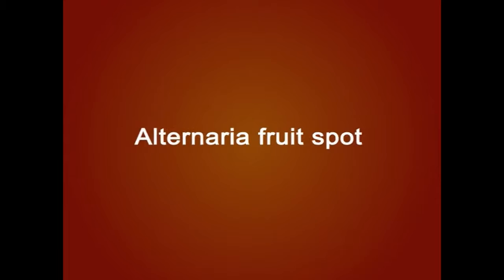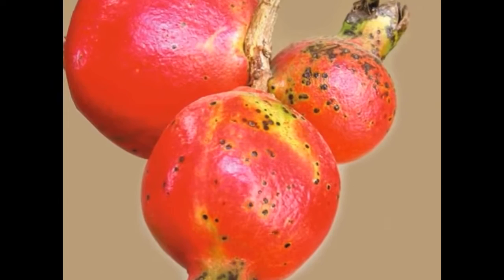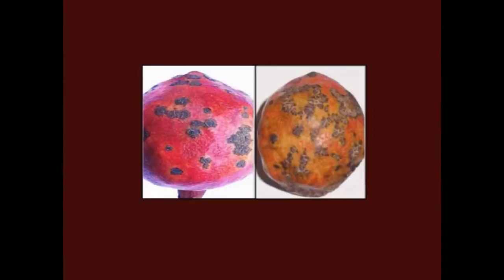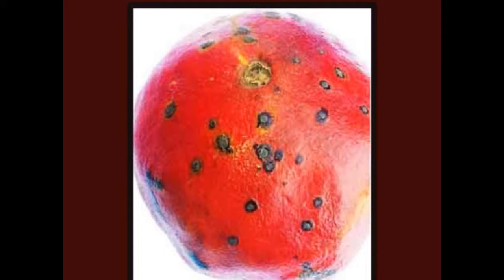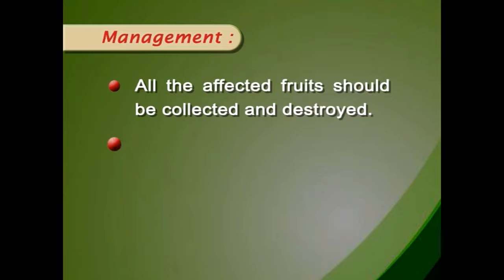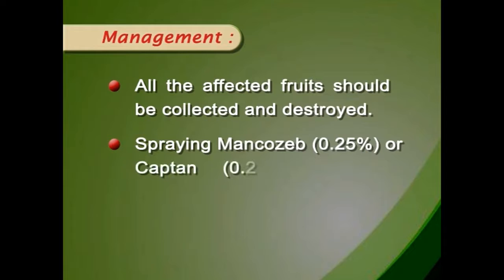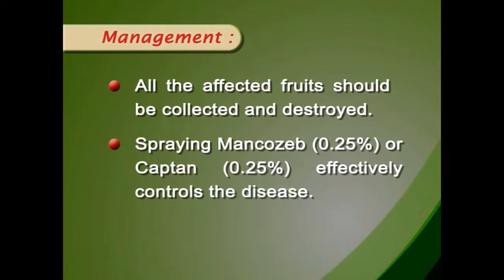The second important disease is Alternaria fruit spot, caused by Alternaria alternata. Small reddish brown circular spots appear on the fruits. As the disease advances, these spots coalesce to form large patches and the fruits start rotting. The fruits become pale and unfit for consumption. All affected fruits should be collected and destroyed. Spraying Mancozeb at 0.25% or Captan at 0.25% effectively controls the disease.